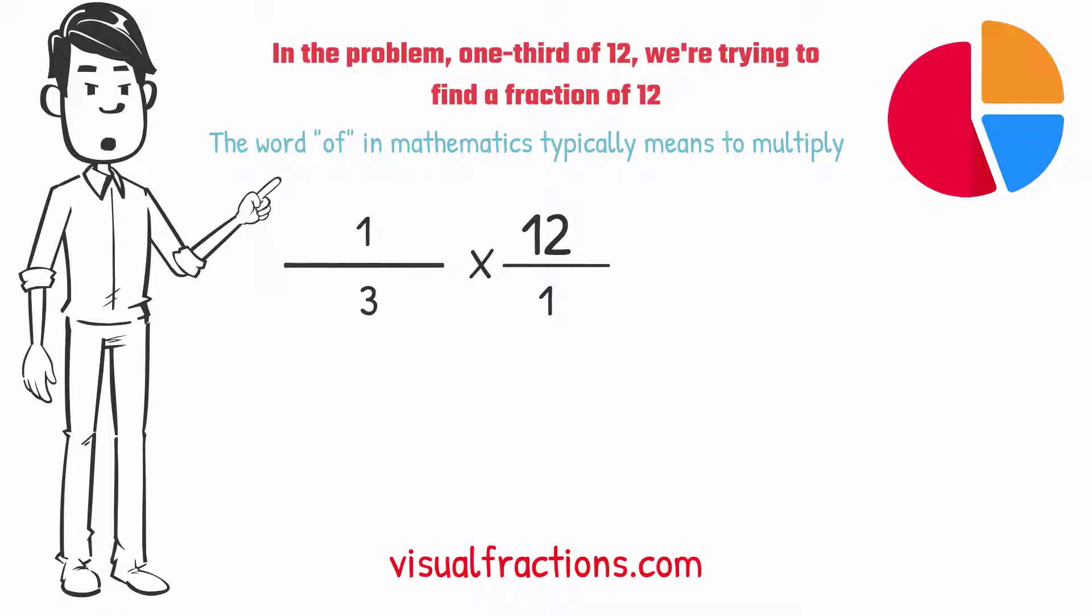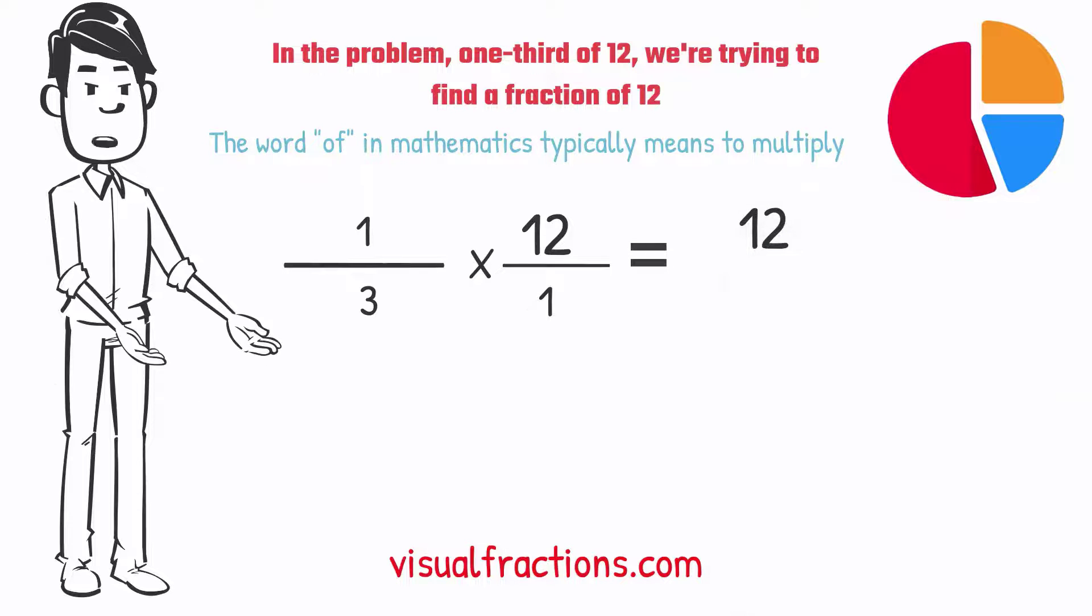This transformation makes it easier to work with our numbers as fractions. Now, we proceed to multiply across. First, multiply the numerators, 1 times 12 equals 12.